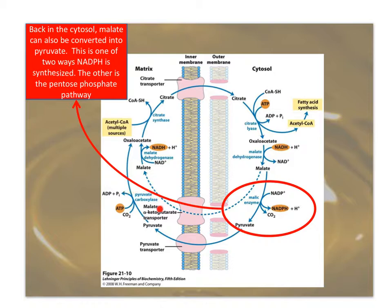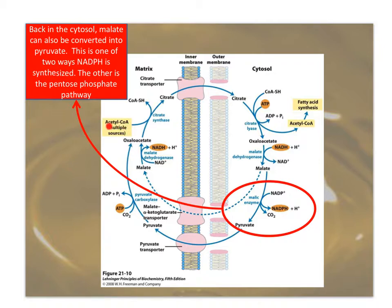Where have we seen pyruvate carboxylase? What metabolic pathway is it part of? Gluconeogenesis. So this is actually one way that gluconeogenesis is also related to fatty acid synthesis — not directly, but it links the two. If you're doing gluconeogenesis, the oxaloacetate is ultimately used to make glucose. If we're trying to make fatty acids, the oxaloacetate is utilized for shuttling what had been acetyl-CoA from inside to outside. The coenzyme A itself does not move — it's the acetyl group that does. It's an ingenious way to interrelate multiple metabolic pathways so we don't need a unique enzyme for every single step.